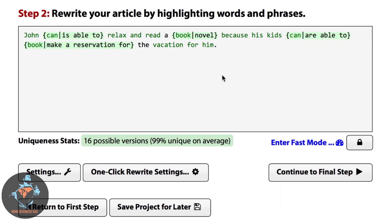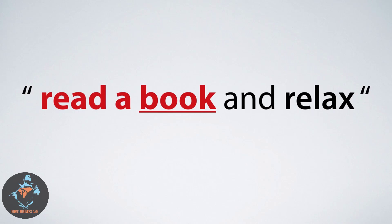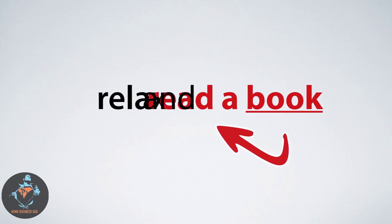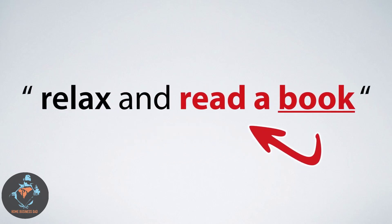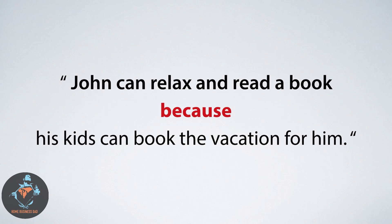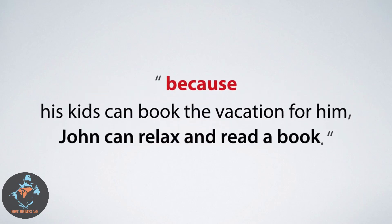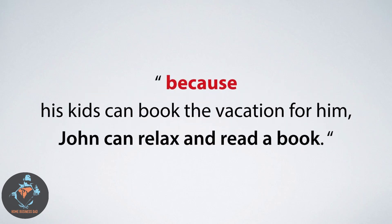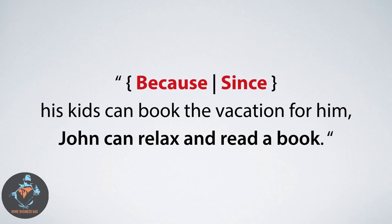But this is not all Spin Rewriter can do. It can also detect that the word 'book' belongs to the verb 'read,' and that both actions — relax and read a book — can be swapped around to make your sentence even more unique. And not just that, it can even rearrange the entire sentence, because it understands cause and effect, so it moves the word 'because' from the middle of the sentence to the very beginning, while preserving the exact same meaning.